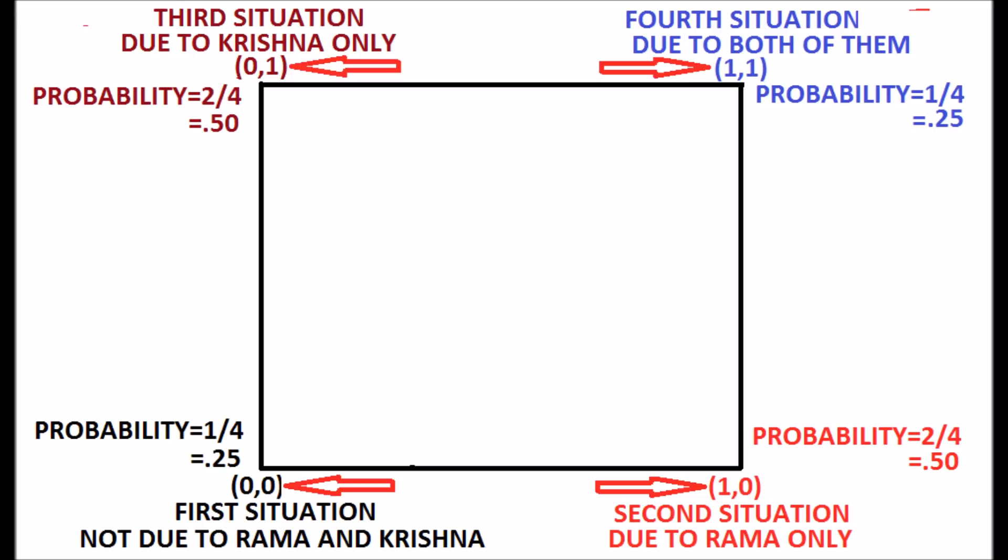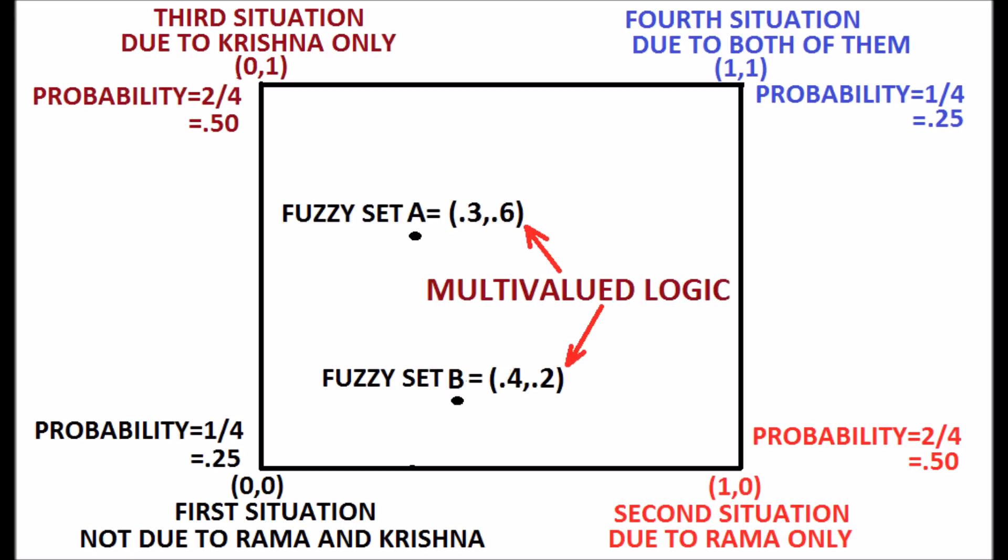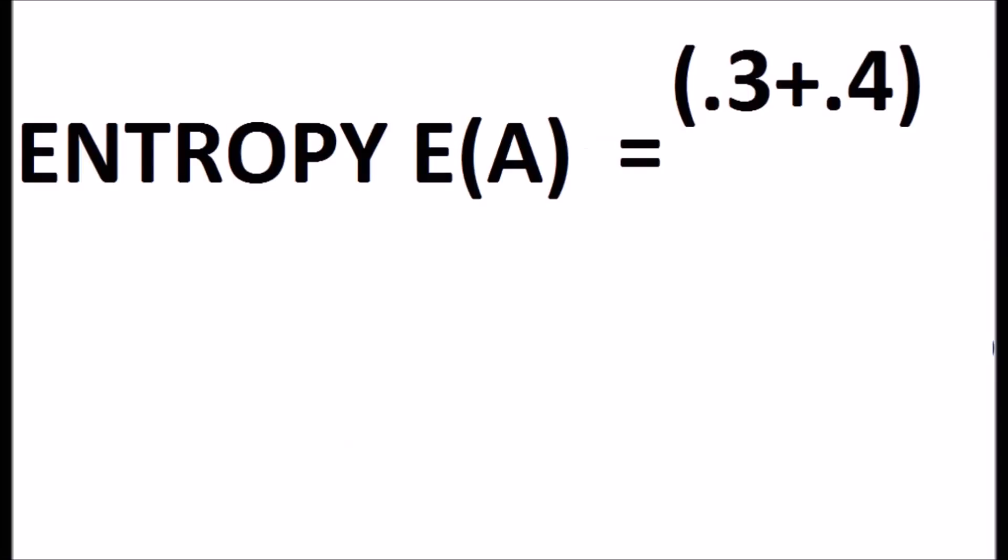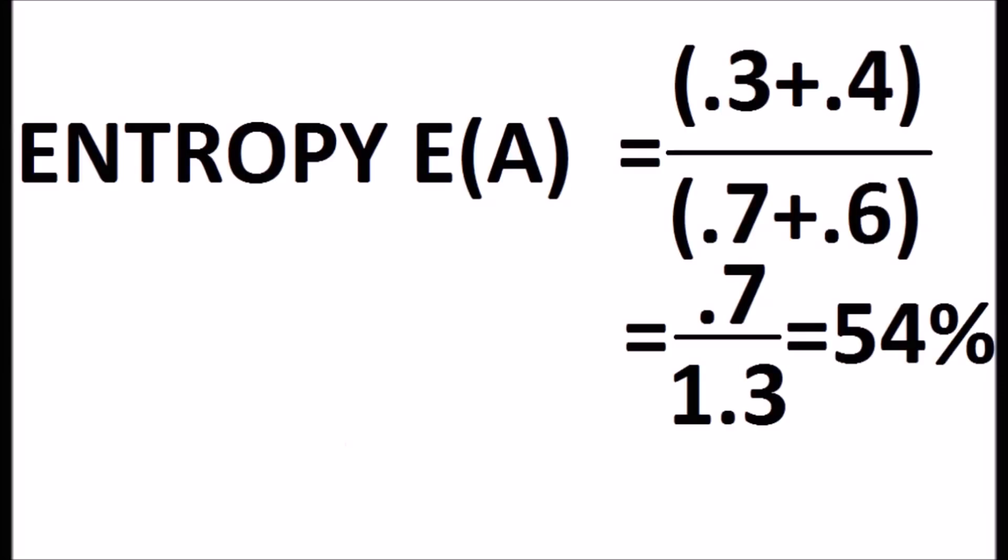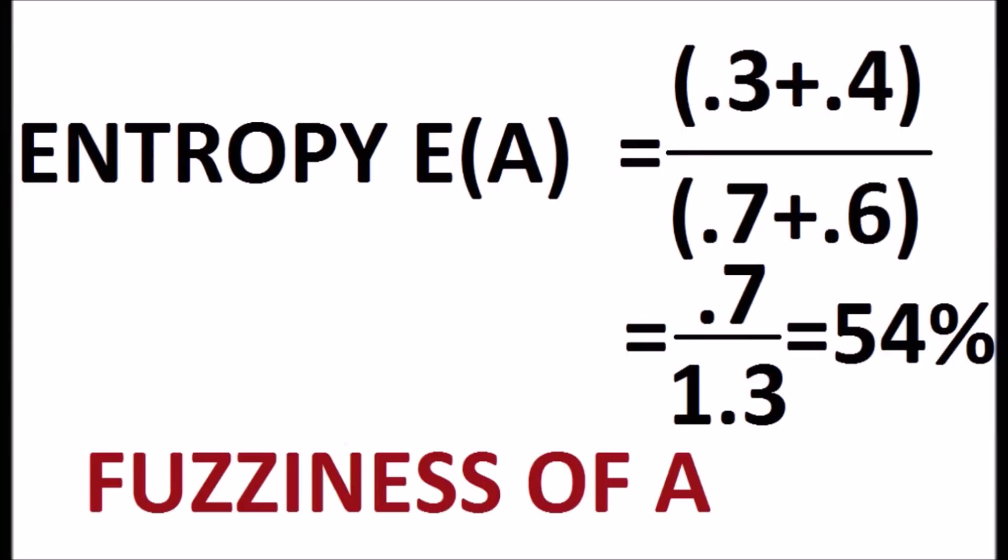The fuzzy estimates the uncertainty based on the multivalued logic. Fuzziness called as entropy and is calculated for the fuzzy set A. E of A is equal to the ratio of cardinality of A intersection with A complement to the cardinality of A union with A complement which is equal to 0.3 plus 0.4 divided by 0.7 plus 0.6 which is equal to 0.7 over 1.3 which is equal to 54% as shown in the display. So, the fuzziness of the fuzzy set A is 54%. That is the entropy of fuzzy set A.